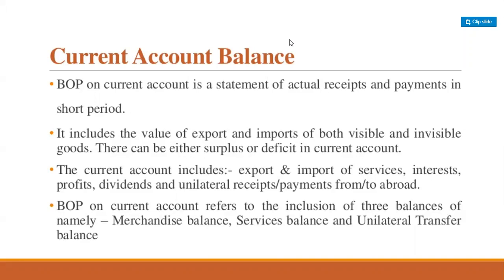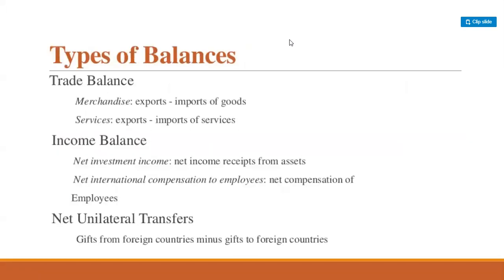Next is export and import of services — invisible trade. This includes a large variety of non-factor services, known as invisible items, bought and sold between residents of the country and the rest of the world. Payments and receipts are made for other countries' use of services. Services are generally of three kinds: shipping, banking, and insurance. Payments for these services are recorded on the negative side and receipts on the positive side.